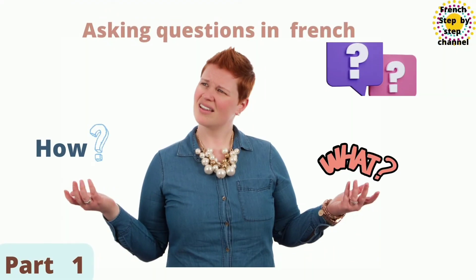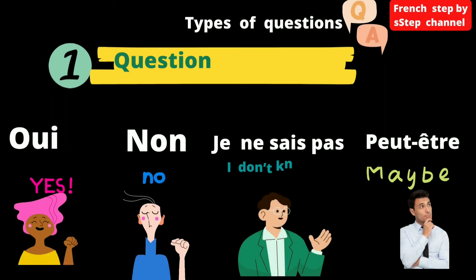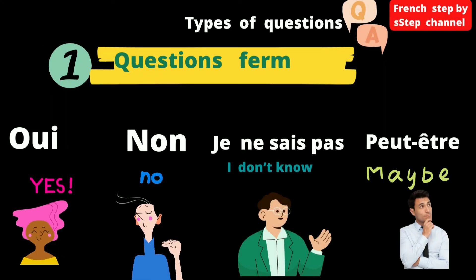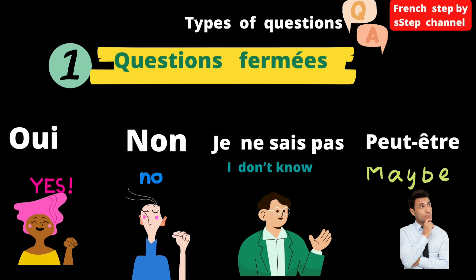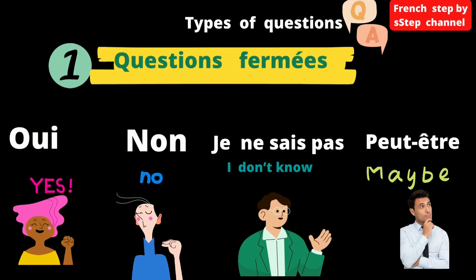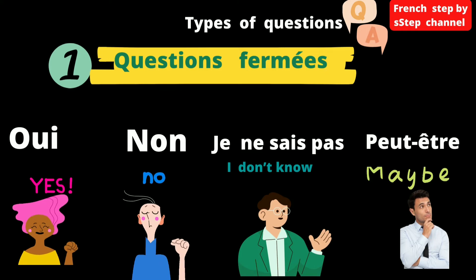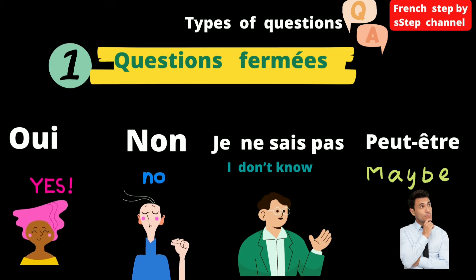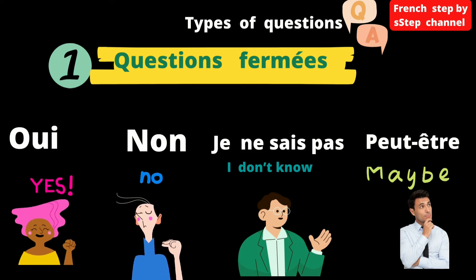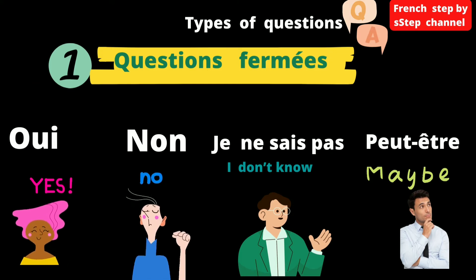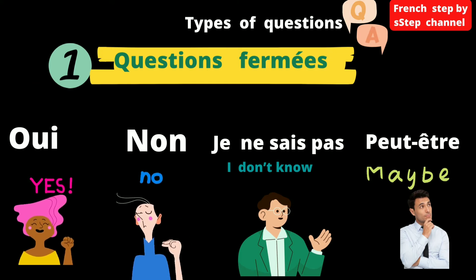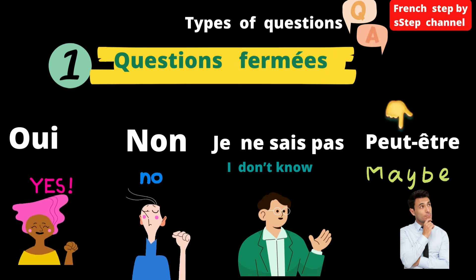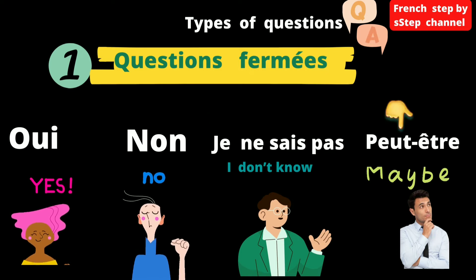Let's discover the characteristics of each type. Questions fermées, or closed questions. This type of question allows a limited selection of responses. We have: oui, non, je ne sais pas, peut-être.